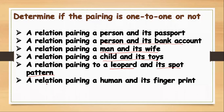And the last one: a relation pairing a human and their fingerprint. Notice that each person has their own unique fingerprint, and so we can say that this is a one-to-one function.